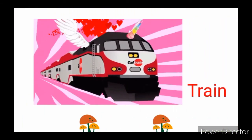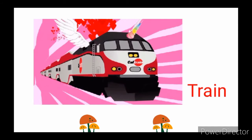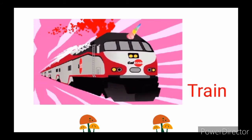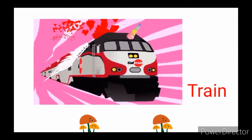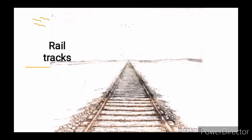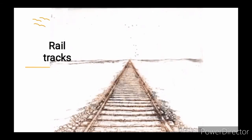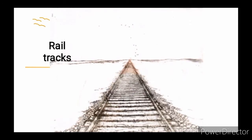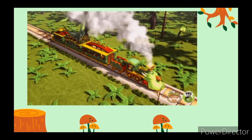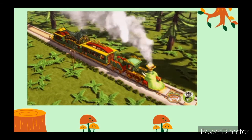Another modern means of transportation is trains. Trains move on rail tracks. This is a rail track and you can see a train here moving on the rail track.